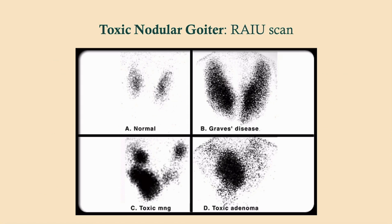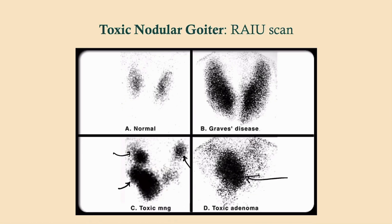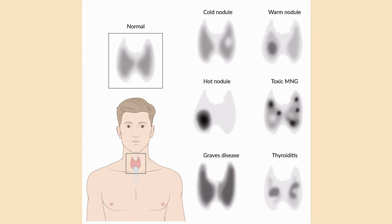With toxic multinodular goiter on RAIU scan, we'll see increased uptake in various nodules — notice here you see at least three. With a toxic adenoma, you're only going to see one. Now when you do that RAIU scan, you might see cold nodules. Warm or hot nodules show areas of increased uptake. Cold nodules show areas of decreased uptake, and you may see that in addition to hot nodules. With cold nodules, you may have to go in with an FNA — fine needle aspiration — which would be the next step. Ultimately you may need to remove these because they may be a sign of thyroid cancer. However, if you're just dealing with hot nodules, you do not need to biopsy.